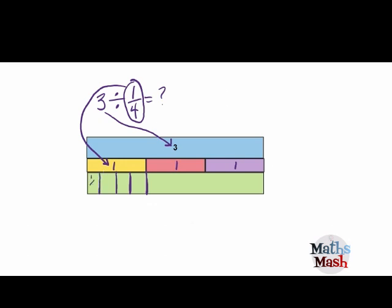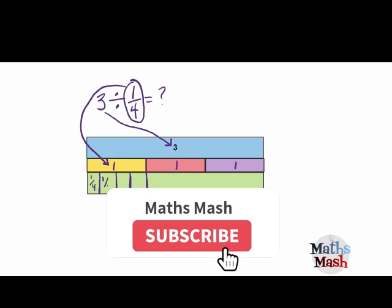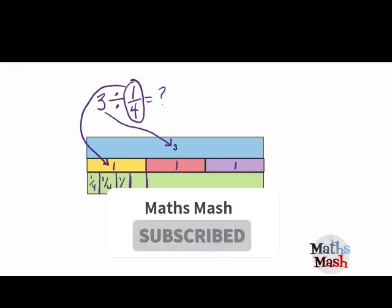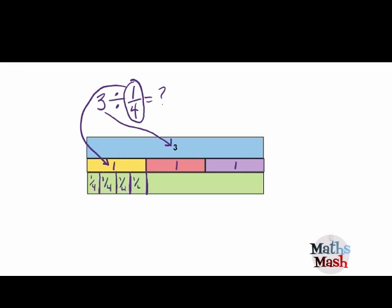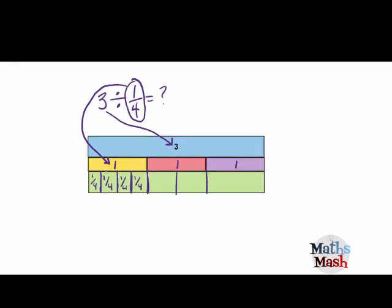And now we just draw 1 quarter in each of these boxes. And I'm going to do the same thing for the other 2 boxes, but I'll do it a lot faster. There we go.